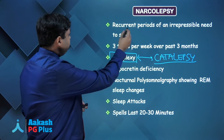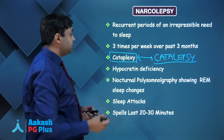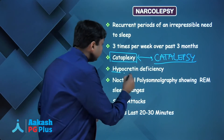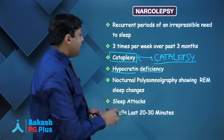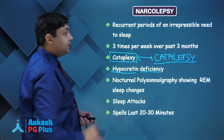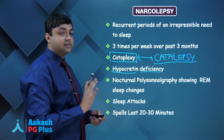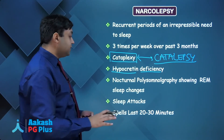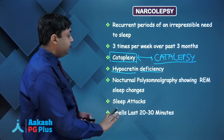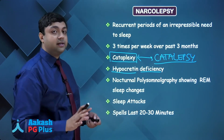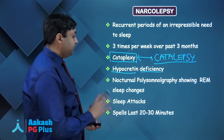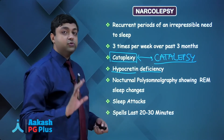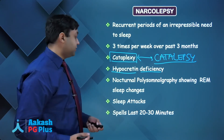In narcolepsy, the person has recurrent periods of irrepressible urge to sleep, cataplexy, hypocretin deficiency, and changes in REM sleep EEG patterns. There are typically sleep attacks in which a person sleeps for around 20 to 30 minutes, is unable to stop the onset of these attacks, and usually wakes up feeling refreshed.